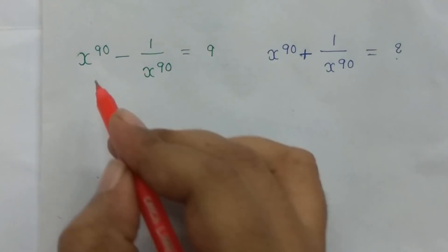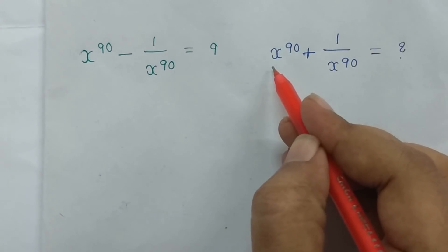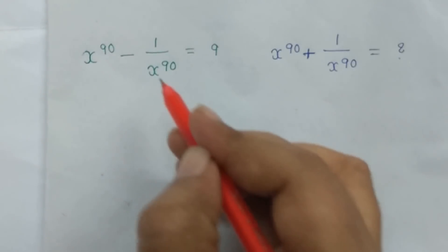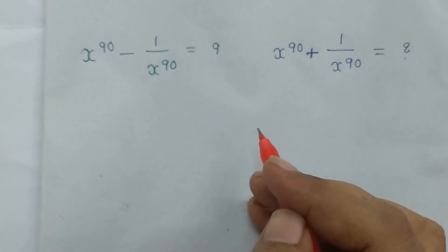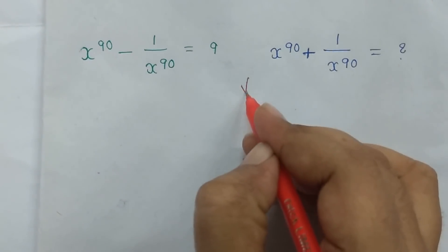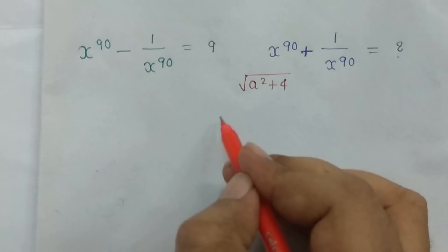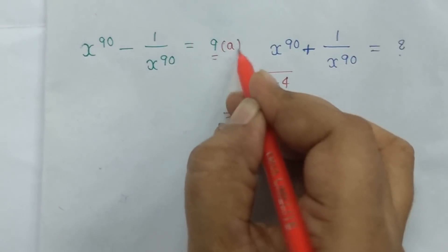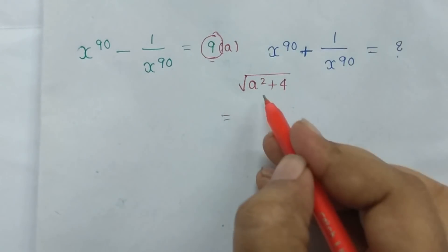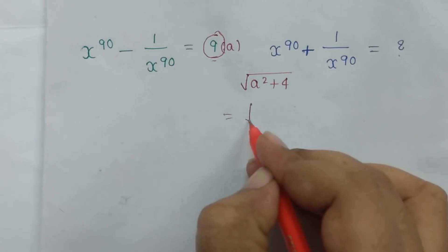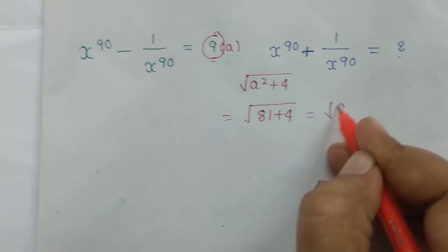Next we will understand: x^90 - 1/x^90 is equal to 9, and x^90 + 1/x^90 is equal to 10. So here x minus 1/x equals a, and x plus 1/x is the formula type of power value. The shortcut formula here is root(a² + 4). So the value equals 9, giving the answer.